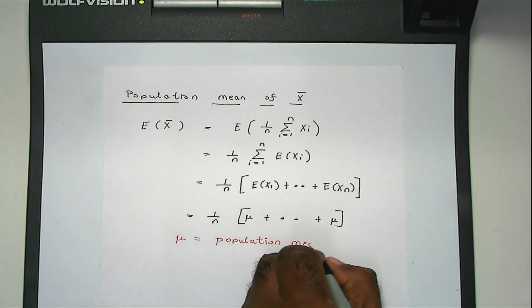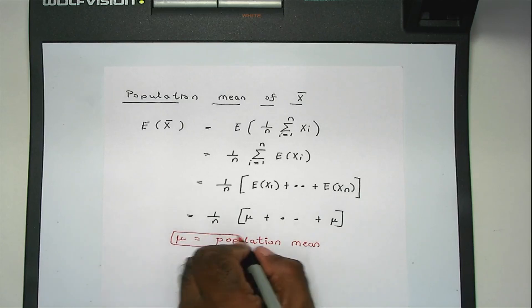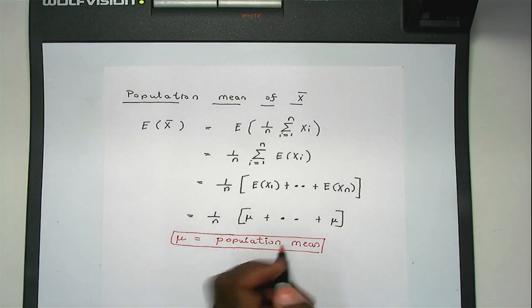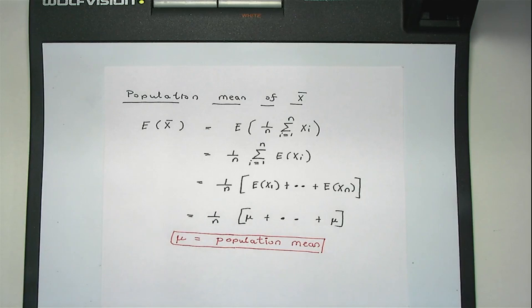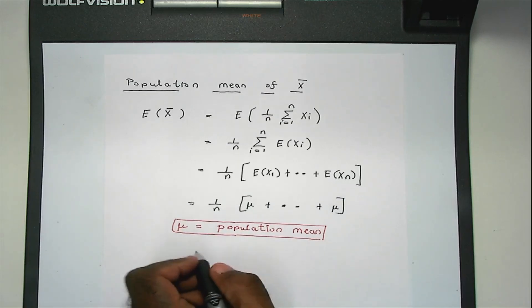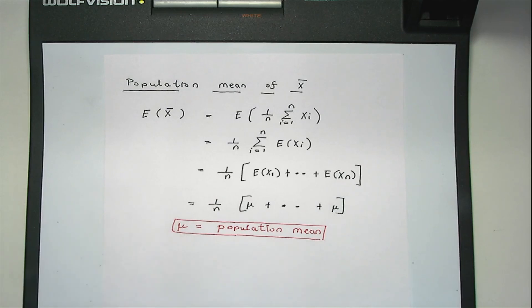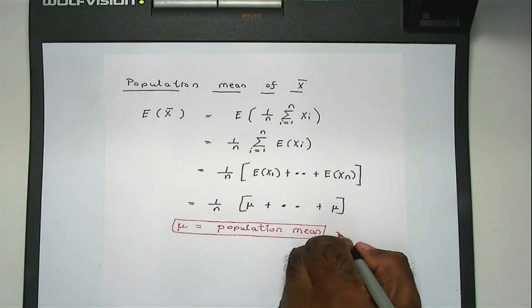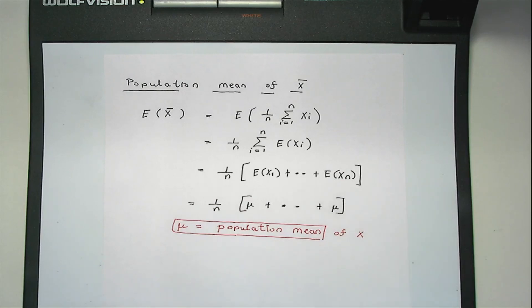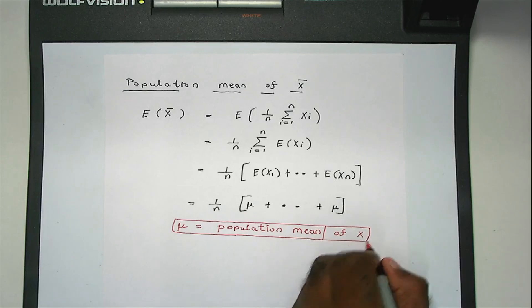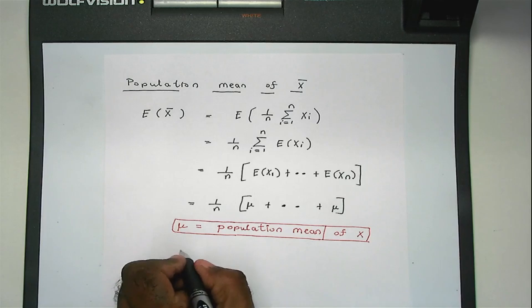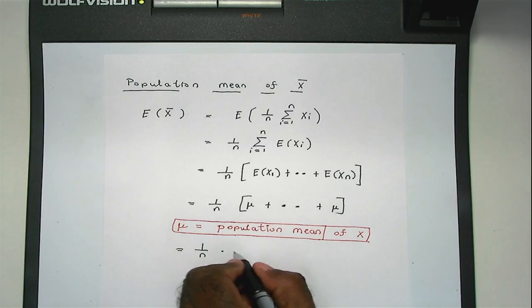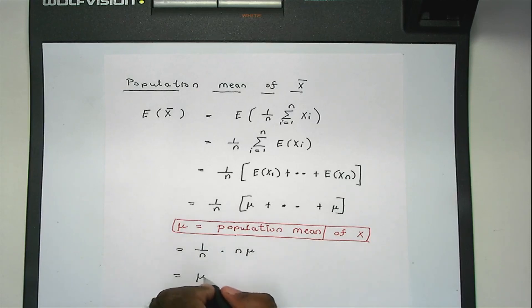Each of these expectations is called mu, where mu denotes the population mean — the mean of the population where the sample came from. So this will be 1 over n times n mu, and this is mu. So the population mean of x bar is equal to mu, which is the population mean of x.